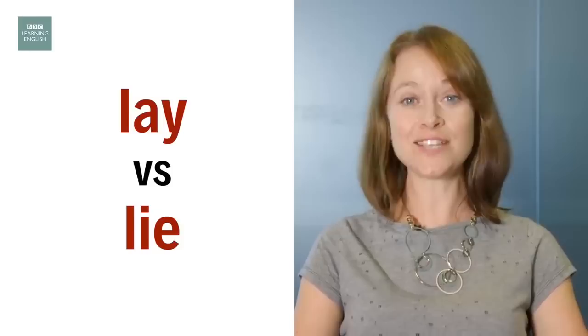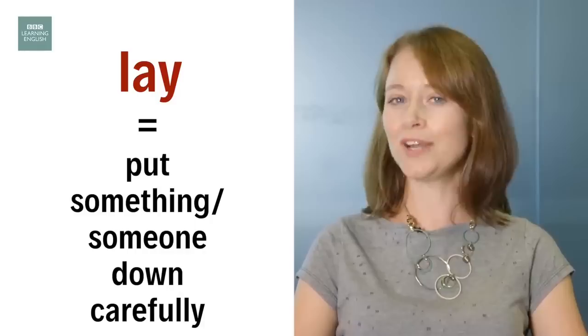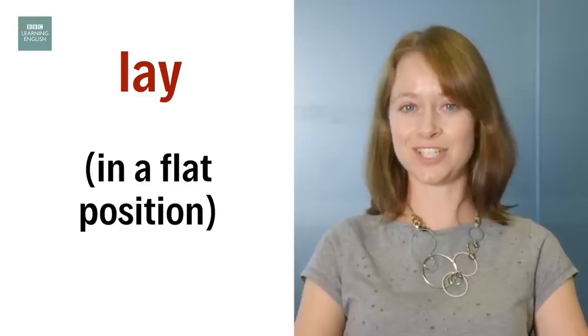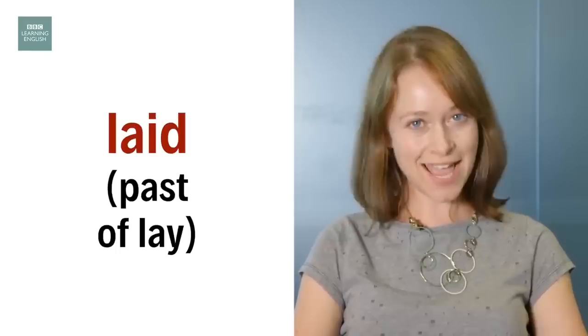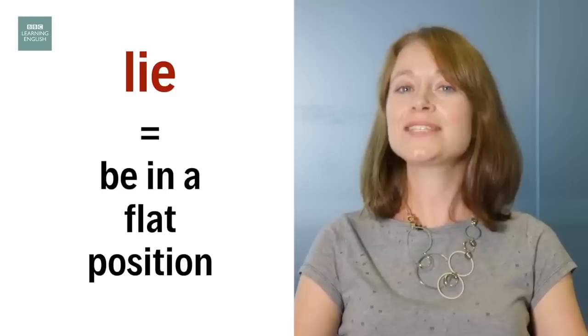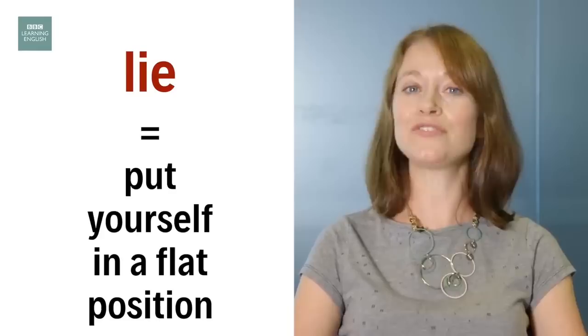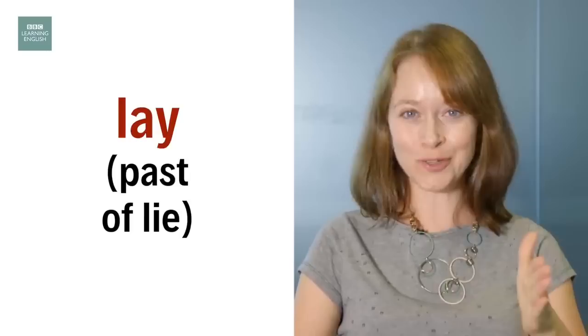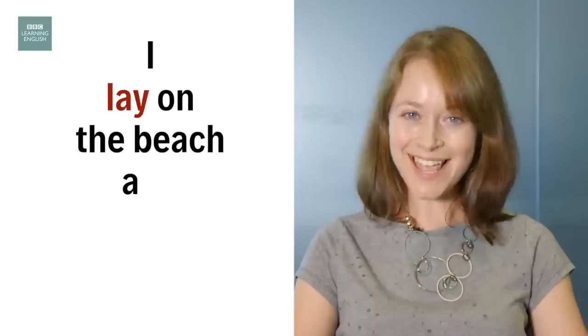I'm Sian from BBC Learning English and today we're going to look at the difference between 'lay' and 'lie'. 'Lay' always has an object and it means put something or someone down carefully, normally in a flat position. When I eat, I lay a cloth on the table. You can lay a baby in a cot. The past tense is 'laid': I laid all my cards on the table. The verb 'lie' doesn't have an object — it means that you are in a flat position or you put yourself in a flat position. Tonight I want to lie on the sofa and watch a film. But be careful — the past of 'lie' is 'lay': yesterday I lay on the beach and read my book.